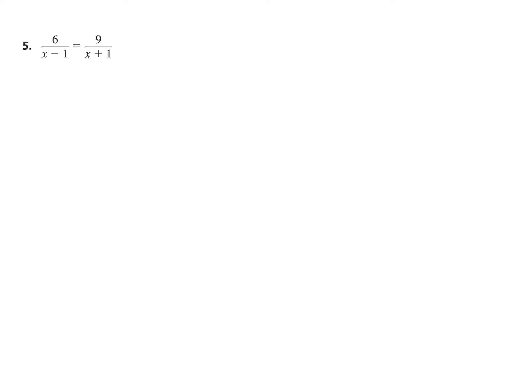This one, again, is in the A over B equals C over D proportion form, which involves cross-multiplying, a.k.a. applying the means-extremes property. The only difference between this one and the first one is the slightly increased complexity with binomial denominators. So bracket those, again protecting yourself from a distribution mistake, and then proceed with the cross-multiplication.